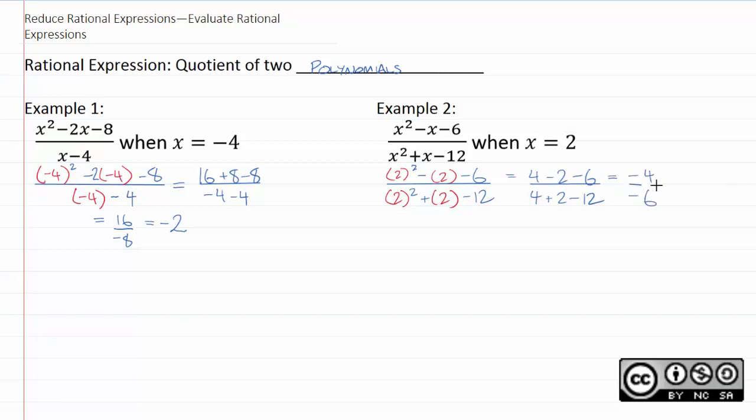Because the top and the bottom are both negative, we get an overall positive answer of two thirds. So as you can see, evaluating polynomials is nothing new. You're just substituting your number and go from there.